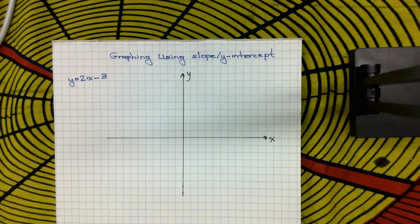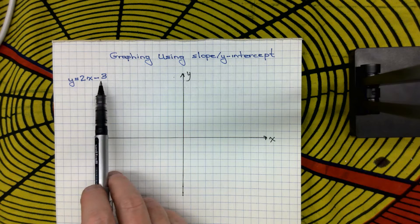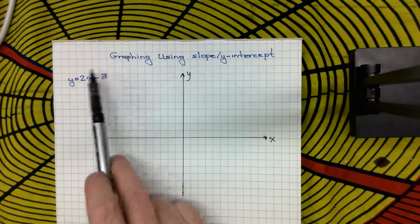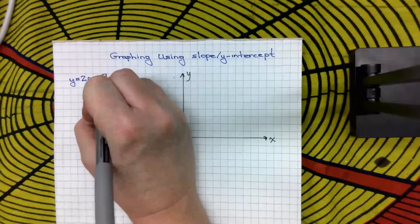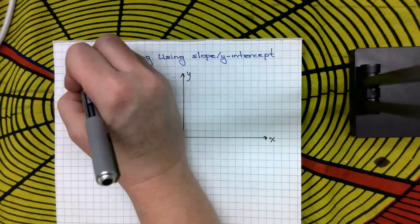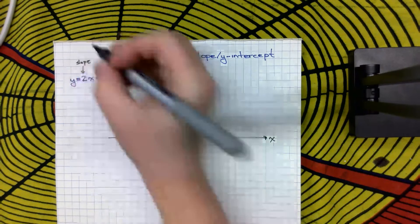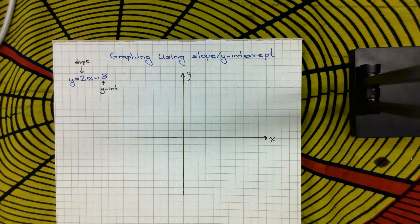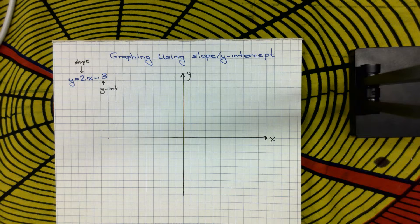So if we take a look at our line right here, we have y equals 2x minus 3, and when we look at it, we know that the number that's all by itself, that has to be the y-intercept, and we know that the number that is beside the x, that has to be the slope. So this is actually one of the nicer forms to graph with, because right away you can just start graphing.